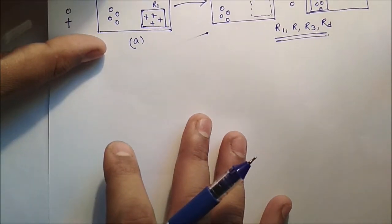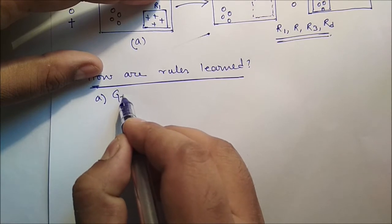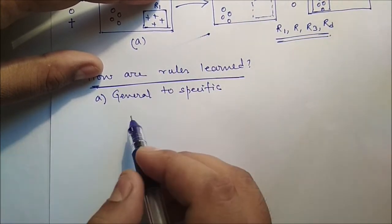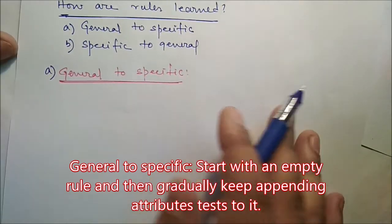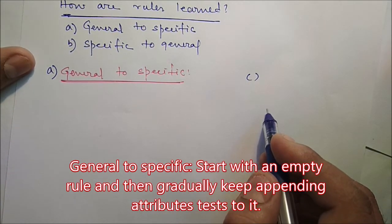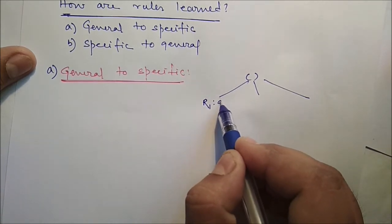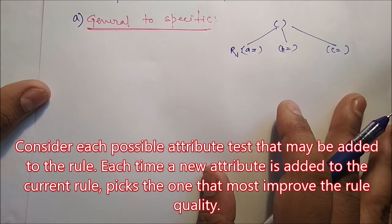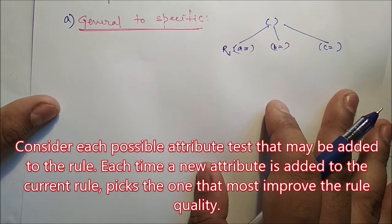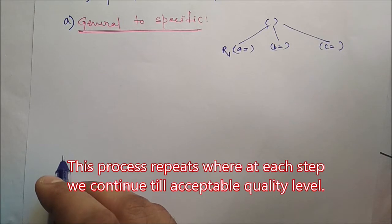The next question is: how are rules learned? There are two approaches — general to specific, and specific to general. In the general to specific approach, we start with an empty rule and then gradually keep appending attribute tests to it. We consider each possible attribute test that may be added to the rule, and each time a new attribute is added, we pick the one that most improves the rule quality. This process repeats at each step until we reach an acceptable quality level.